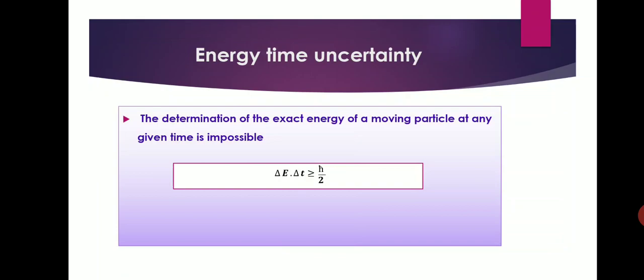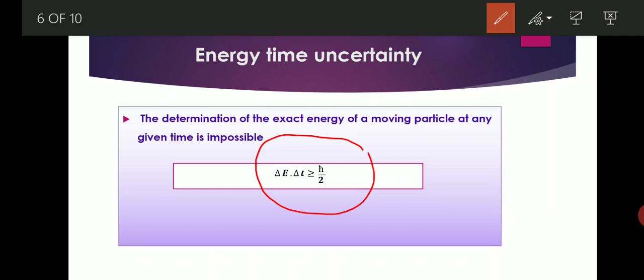We also have uncertainty in energy and time. According to the energy-time uncertainty principle, the energy of an object can be uncertain by an amount ΔE for a time Δt, giving ΔE · Δt ≥ ħ/2, where ΔE is the uncertainty in energy and Δt is the uncertainty in time.